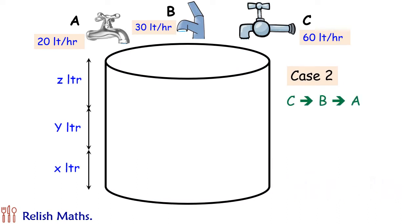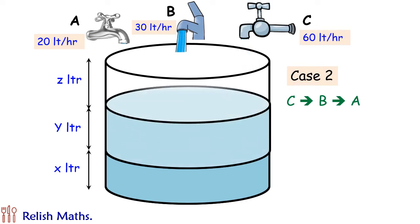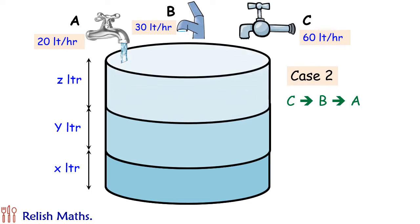The order of filling of tap is reversed in this case. First, tap C is used to fill up X liters of water, then tap B is used to fill up Y liters of water, and in last, tap A is used to fill up Z liters of water. The total time taken to fill up in this case is 3 hours.